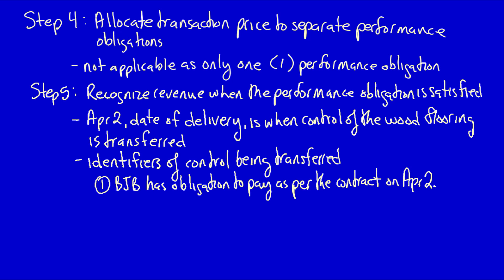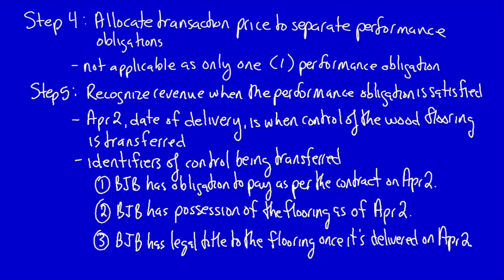First, BJB has an obligation to pay as per the contract terms once the wood has been delivered on April 2nd. Second, BJB Inc. has possession of the wood flooring as of April 2nd. Three, BJB Inc. has legal title of the wood flooring because the contract indicates that legal title has transferred as of April 2nd. Four, the risks and rewards of ownership have transferred on April 2nd because BJB, if they accidentally damage the wood flooring, it'll be their problem, not Green Inc.'s, so they have the risks of ownership.